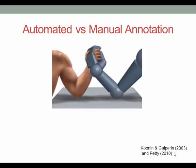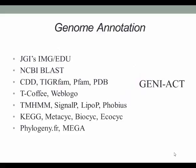What types of bioinformatics tools are used to annotate a gene? Often the same tools used in the automated annotation — things like IMG-EDU, BLAST, CDD, TIGRfam, PFam, PDB, T-Coffee, WebLogo, and more. For most novice bioinformaticists, it's a daunting task to know which programs are appropriate for a specific project. The list shown here is just a small fraction of the many bioinformatics programs that are freely accessible online.